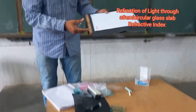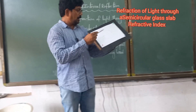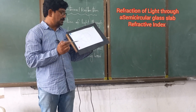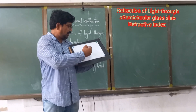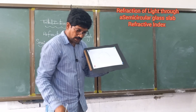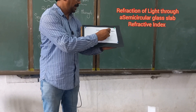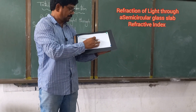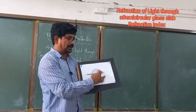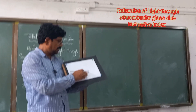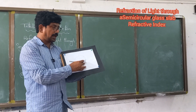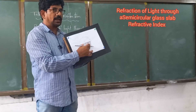Before starting the experiment, take a white paper and draw two mutually perpendicular lines on it. Name the point of intersection as O. On either side of O, keep the protractor and mark the angles on either side.